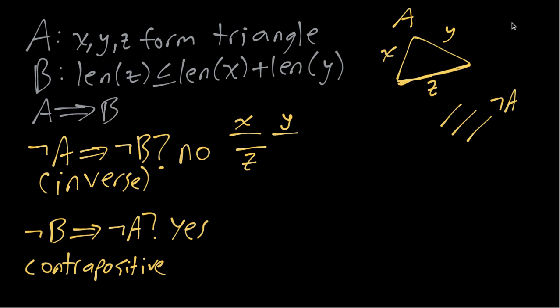So we can see that here if B is false, that is what I drew a minute ago where we have X and Y and then Z is a lot longer, and we could ask ourselves is there any way we could possibly rearrange these three line segments without changing the length, rearrange them into a triangle.